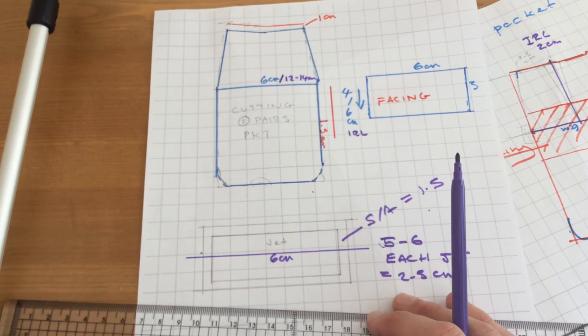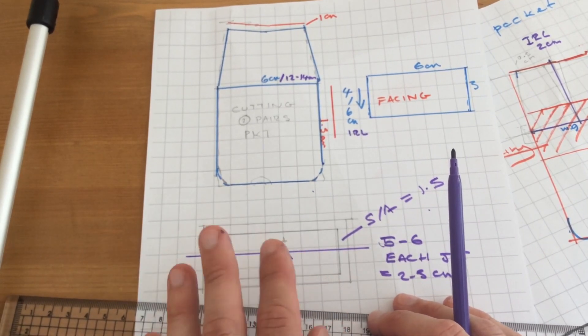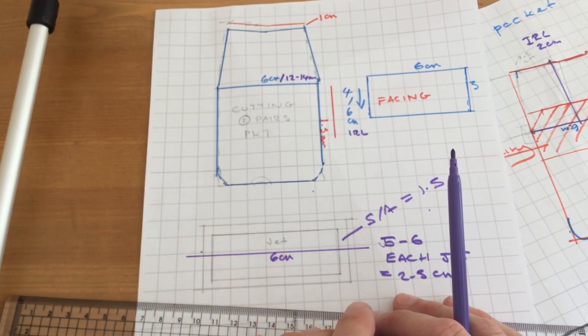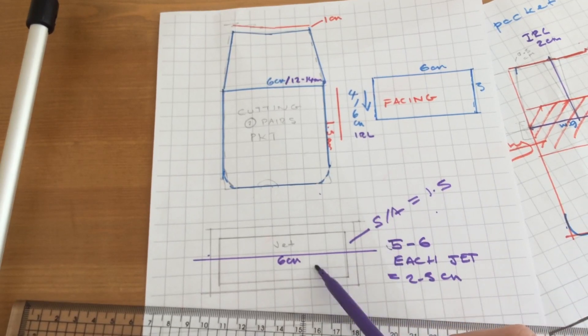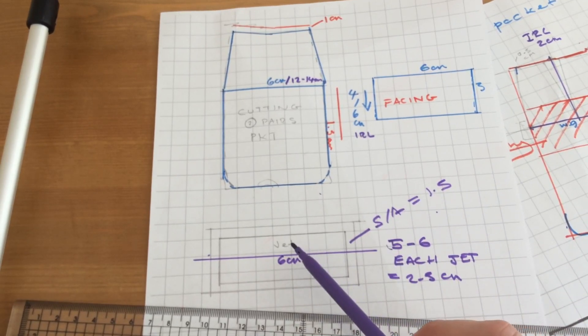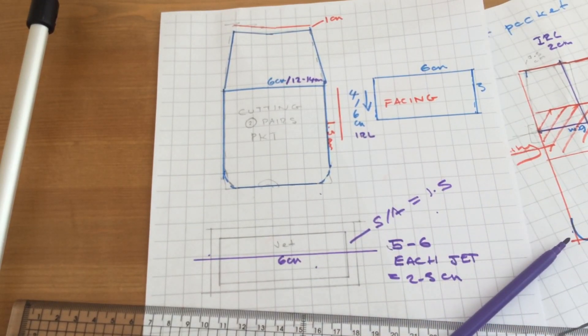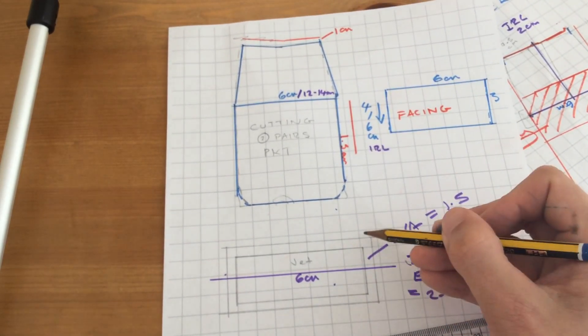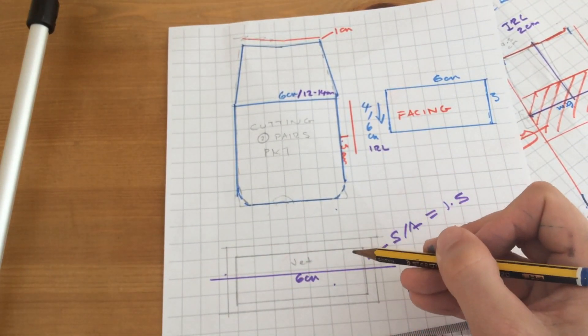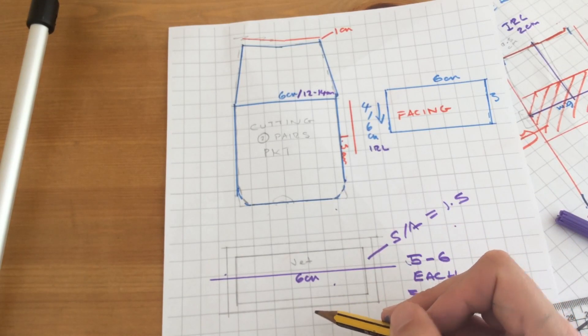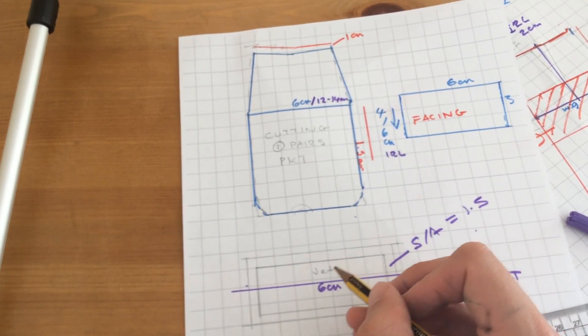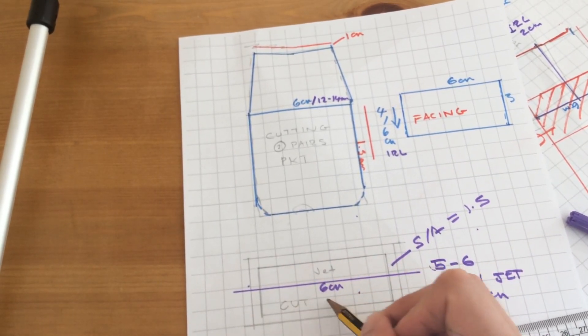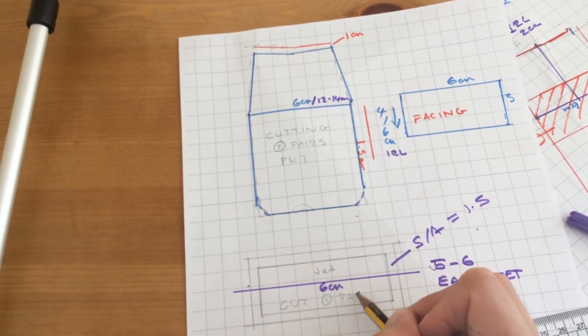There are details online about the machine that makes these pockets. So this is the jet. So one pattern piece when cut in the fabric will make one jet, so we will need to cut one pair of this.